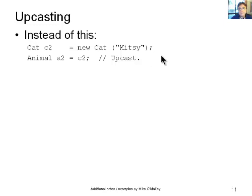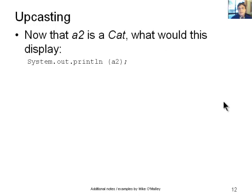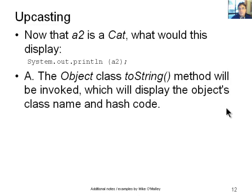Instead of these two lines of code, Cat C2 equals new Cat and Animal A2 equals C2, we could do it all in one line of code. For example, Animal A2 equals new Cat Mitzi, and that's still an upcast equivalent to those two lines of code there. So we could do a shorthand if we'd rather. Now that A2 is a cat, what would this line of code display? Print line A2. So A2 is a cat, so the toString method in the object class will be invoked, and it'll output the object's class name and the hash code, and of course this time it'll be cat followed by the hash code, which will change each time you run the program. So we'd see cat there.